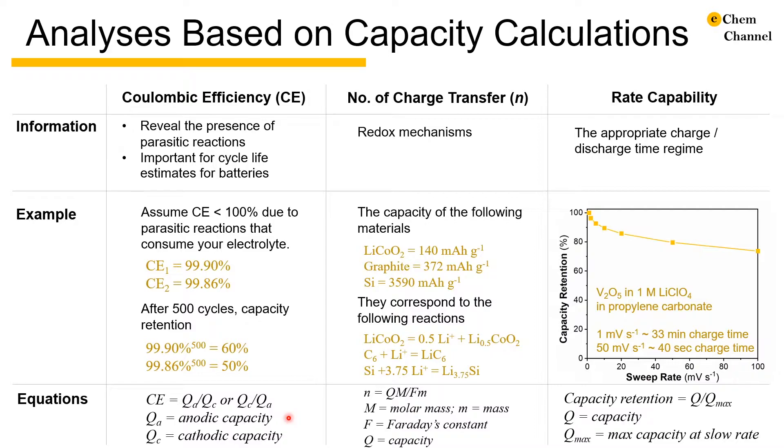For lithium cobalt oxide, we need to first deintercalate lithium or oxidize it and then to intercalate lithium or reduce it in the reverse cycle. In this case, we will use the ratio of cathodic capacity to anodic capacity.